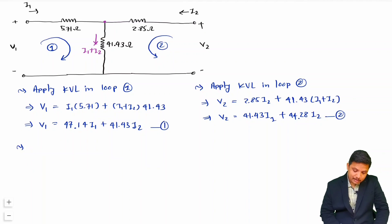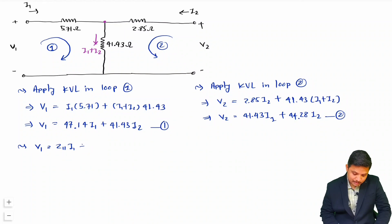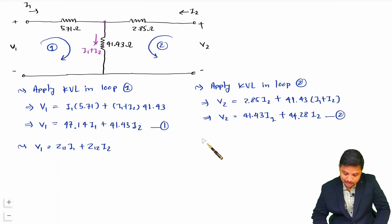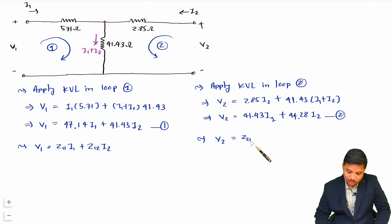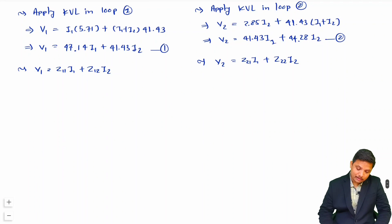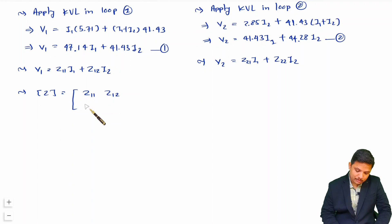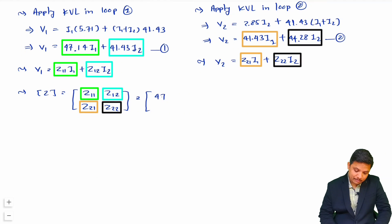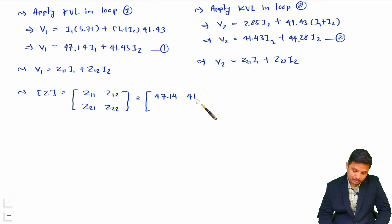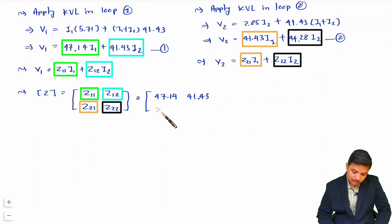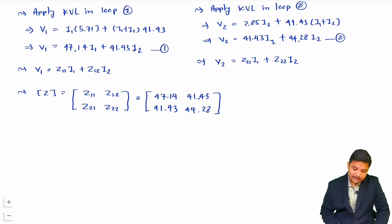Comparing with the standard Z parameter equations — V1 = Z11·I1 + Z12·I2 and V2 = Z21·I1 + Z22·I2 — we get the Z matrix: Z11 = 47.14, Z12 = 41.43, Z21 = 41.43, Z22 = 44.28.